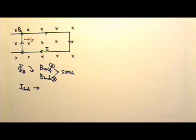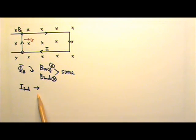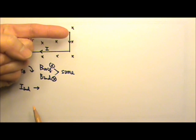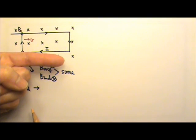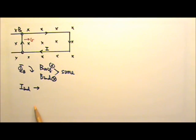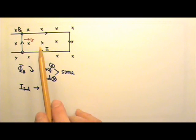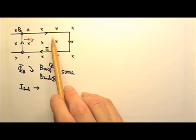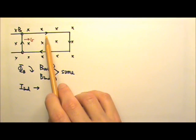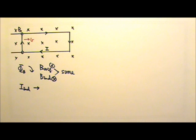When answering the direction of the induced current, do not draw a single arrow to the right, because your teacher will not know whether you mean to the right on one side or the other. If you draw one arrow, make sure to draw it on the loop itself, or simply state that the current flows clockwise.